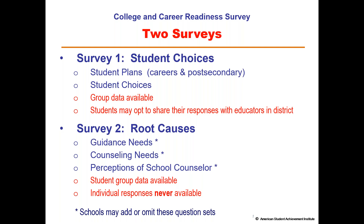The second survey is the root causes survey. This survey helps us understand why students are making — or not making — the student choices we hope they will make. The root causes survey consists of three optional question sets: the guidance needs questions, the counseling needs questions, and the perceptions of the school counselor. Schools can choose to include or exclude those question sets. Student group data is available for the root cause questions, but individual responses are never available for an individual student.